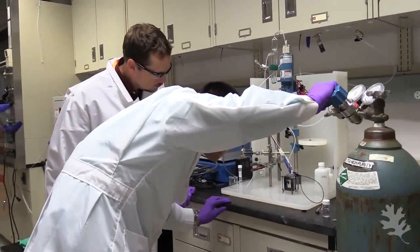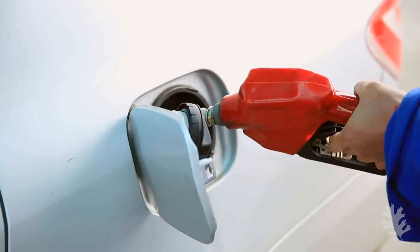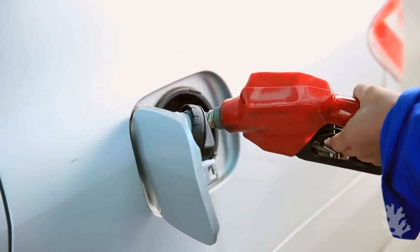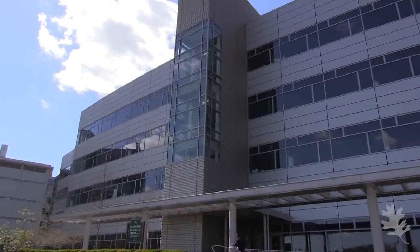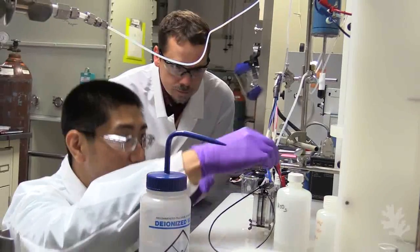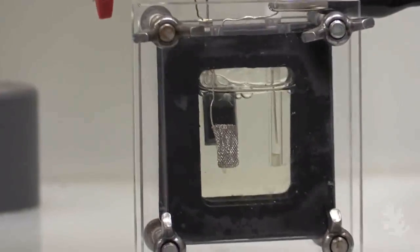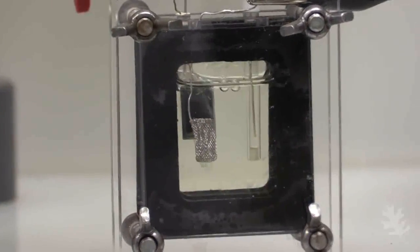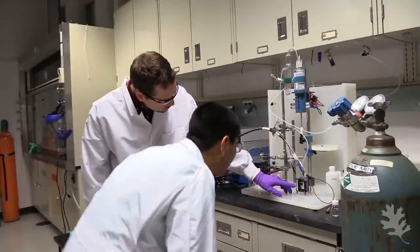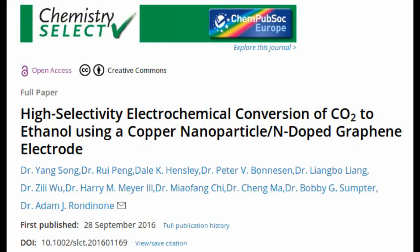In a new twist to waste-to-fuel technology, scientists at the Department of Energy's Oak Ridge National Laboratory have developed an electrochemical process that uses tiny spikes of carbon and copper to turn carbon dioxide, a greenhouse gas, into ethanol.